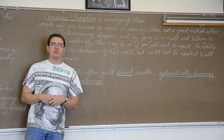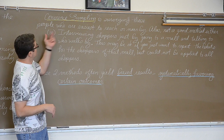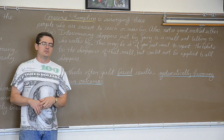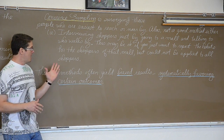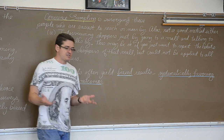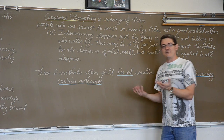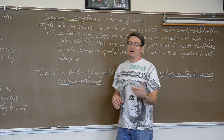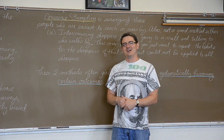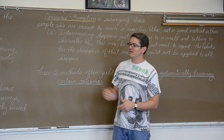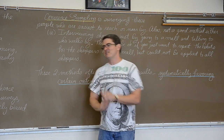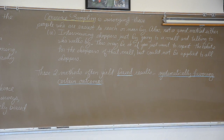With voluntary response you have negative bias, and with convenience sampling it will be nearly impossible to get a sample that truly represents the population you want to learn about. We have to teach these bad methods because if you don't know how to do things wrong, you might not understand what is good about what is right. Hit play on the next video. Thank you for watching — I greatly appreciate it. Like, subscribe, click on an ad if it looks interesting, and thank you very much for watching.